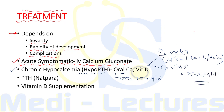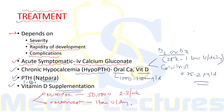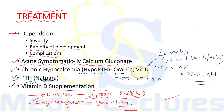Calcitriol can also be given at 0.25 to 2 micrograms per day orally. Recently, parathormone 1-84 (brand name Natpara) has been approved by the FDA for treatment of refractory hypoparathyroidism. Vitamin D deficiency is treated with supplementation: for nutritional deficiency, 50,000 units of vitamin D2 or D3 two to three times per week; for malabsorption, double the dose (100,000 units) given daily.